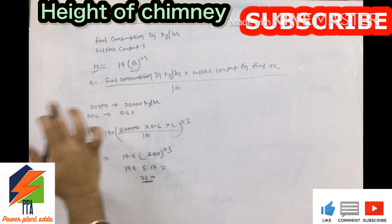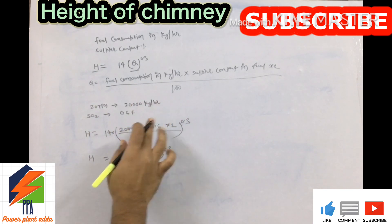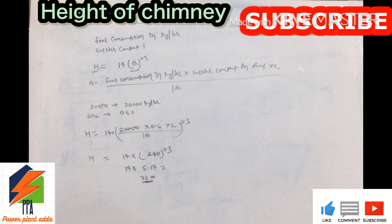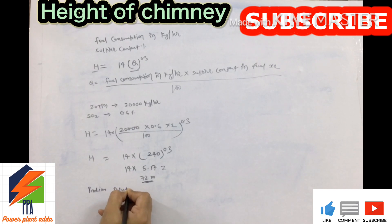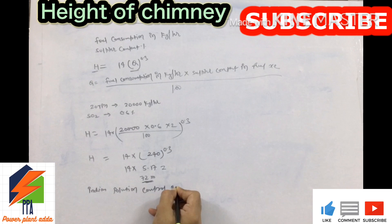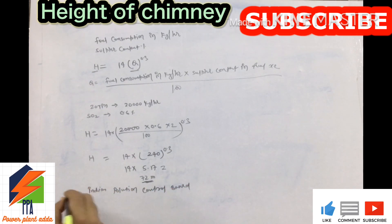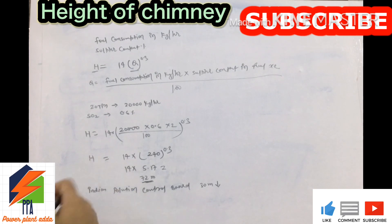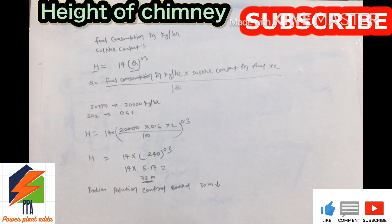So if fuel consumption is 20,000 kg per hour and sulfur content is 0.6%, the chimney height comes out to 72 meters. According to the Indian Pollution Control Board, if your calculated chimney height is less than 30 meters, you cannot keep it at that height — you must keep it at a minimum of 30 meters.